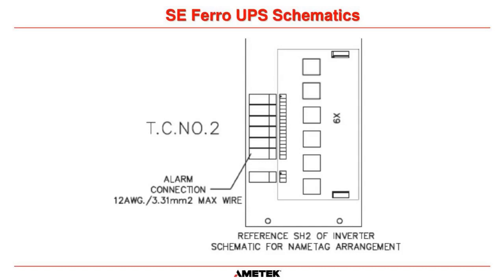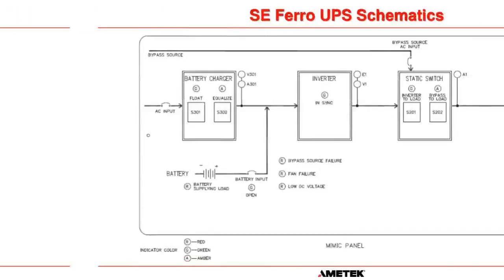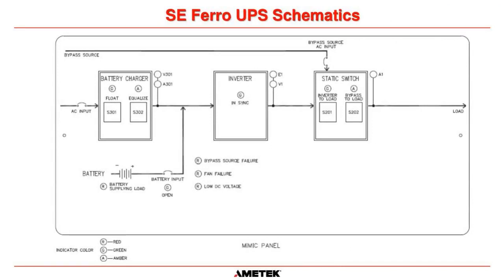Also on page two is terminal channel number two, showing the alarm connections. Number 12 wire is the maximum wire size for alarm connections back to your DCS system, and it references sheet two of the inverter schematic for the name tag arrangement. Also on page two is the mimic panel — a direct replica of what's on your UPS. It shows the AC input breaker, the float push button S301, the equalized push button S302. If float is on, the green LED is on; if equalized is on, the amber LED is on.